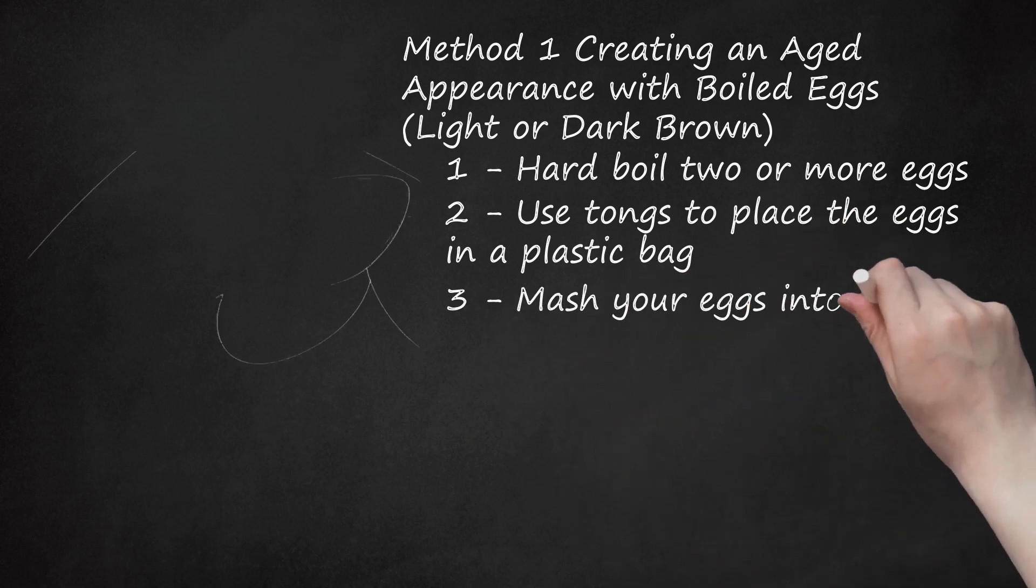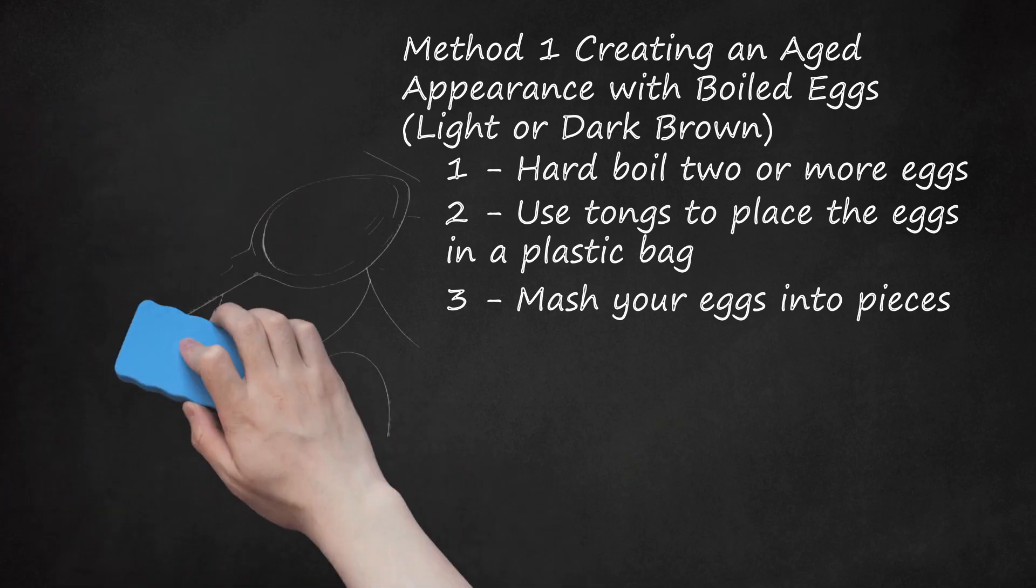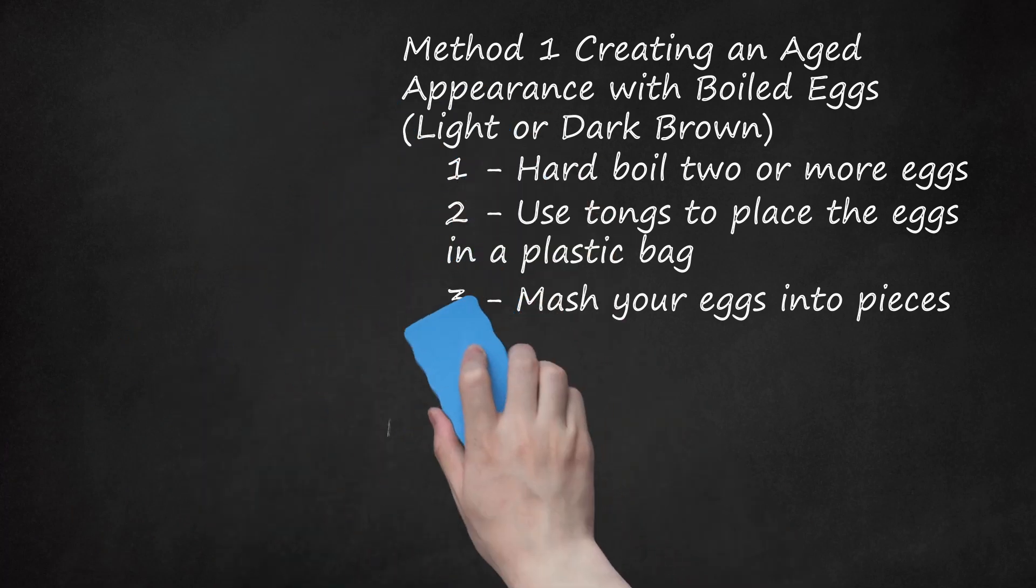Step 3: Mash Your Eggs Into Pieces. Seal the Bag Halfway Closed Before You Begin to Avoid Spraying Egg Through the Opening. Hit the eggs through the plastic bag with a spoon, the base of a cup, or any heavy object. Crush the shell, white, and yolk until it is mashed into many pieces. Don't seal the bag all the way, or the air pocket will make it difficult to break the egg.